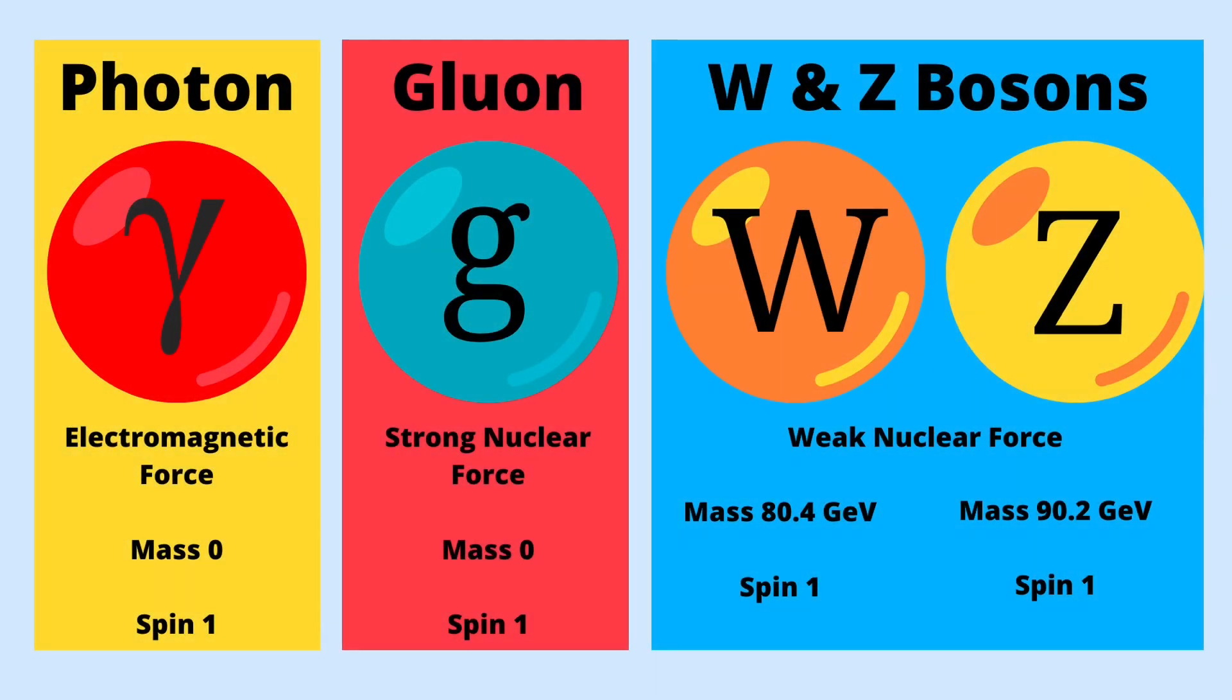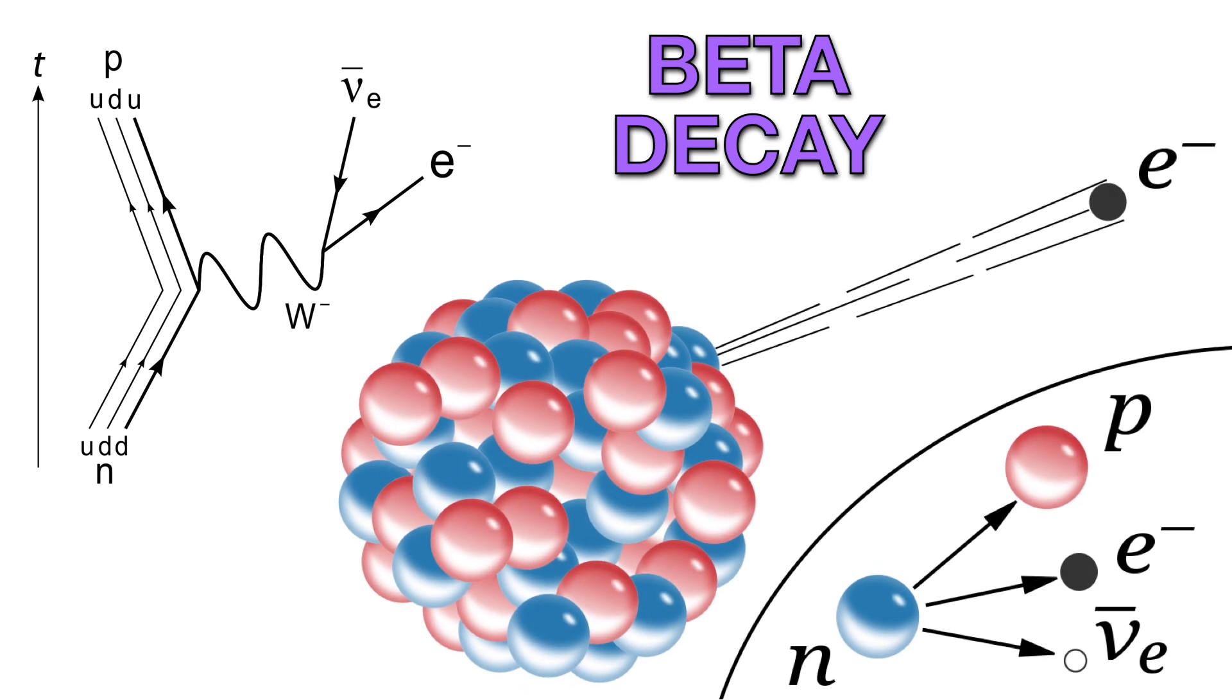The quantum mechanical description uses messenger particles to propagate the force between particles. These messenger particles are spin-1 bosons. For example, beta decay is propagated by a negatively charged W boson.